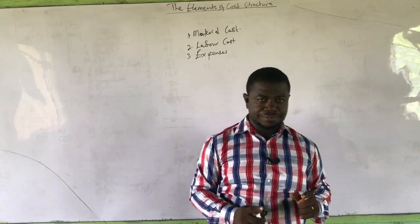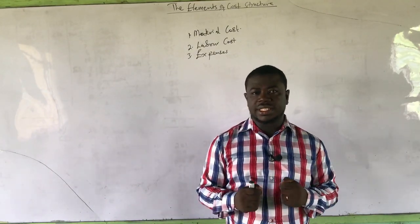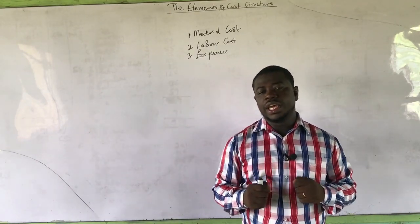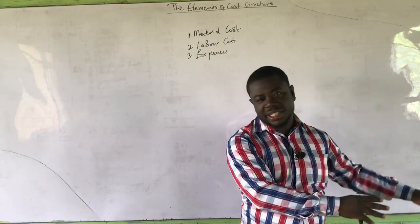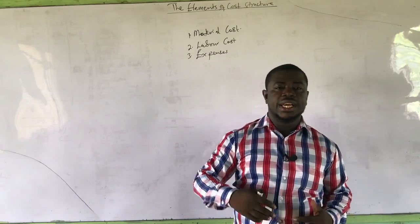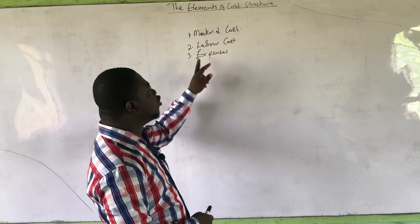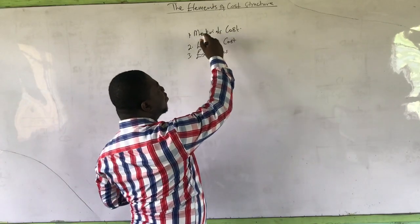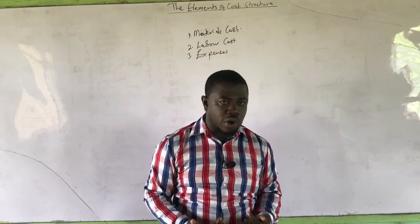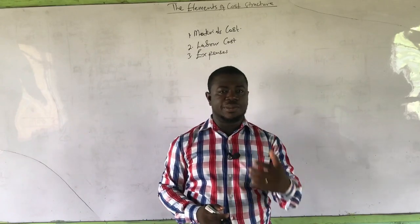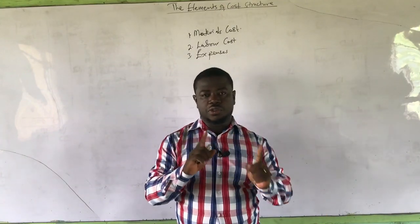What is material cost? Material cost refers to the cost of the physical substances that are used in the production of goods and services. Now, it is different from materials. There is a difference between materials and material cost. So when you go to a cost and management accounting exam and you are asked to explain materials, it is different from when you are asked to explain material cost. A lot of students confuse the two.